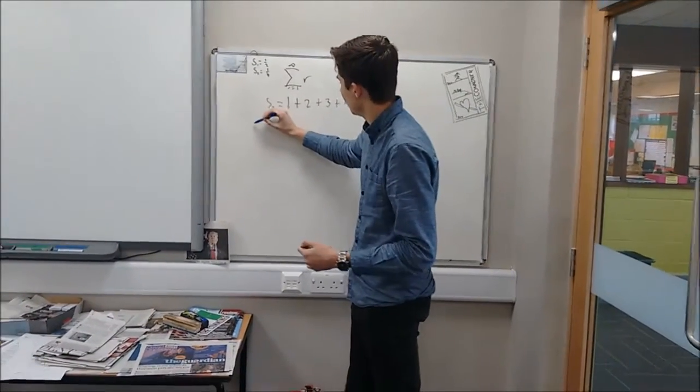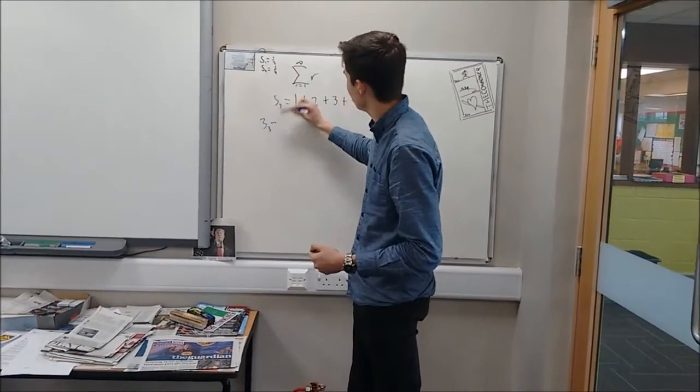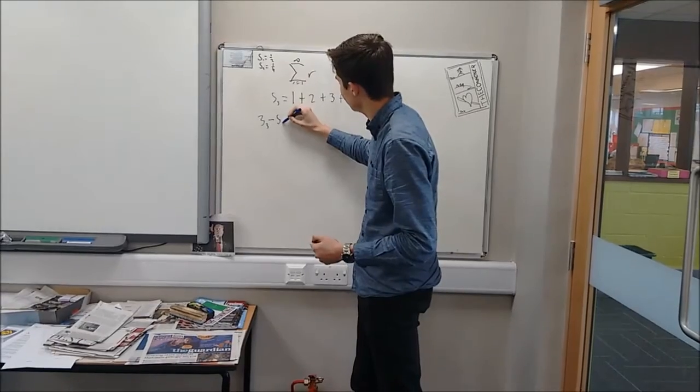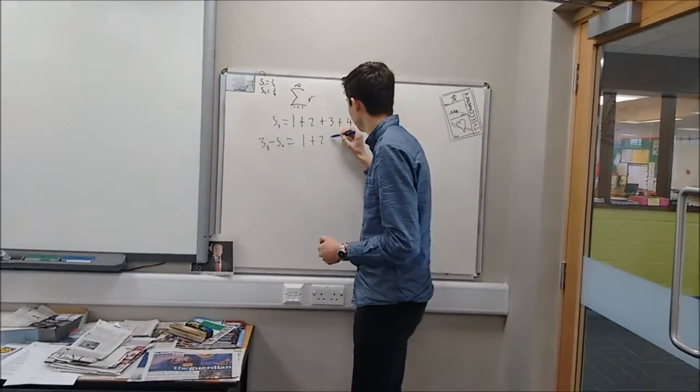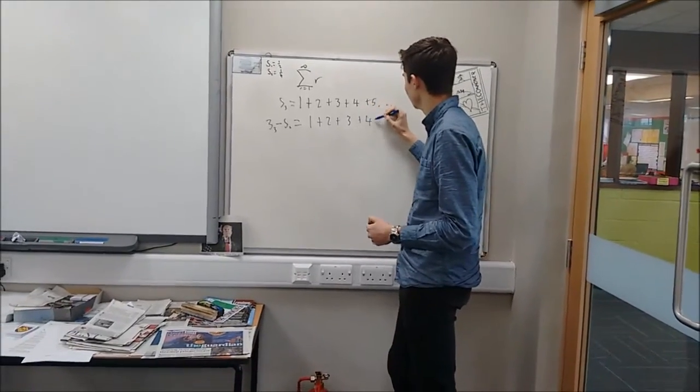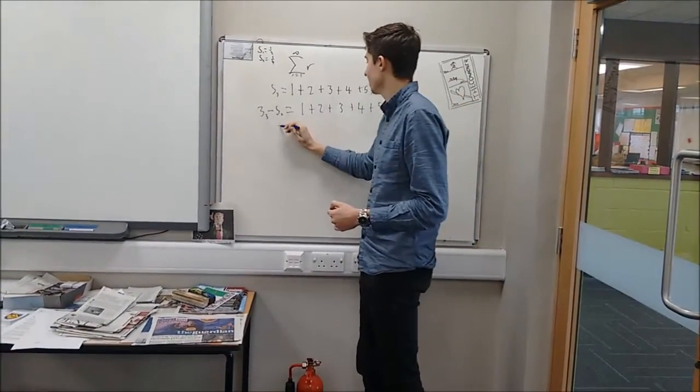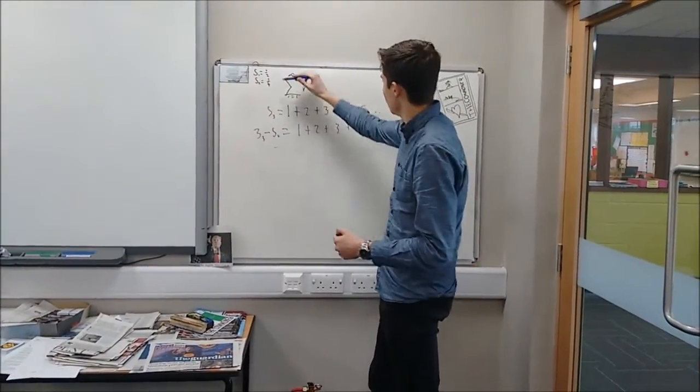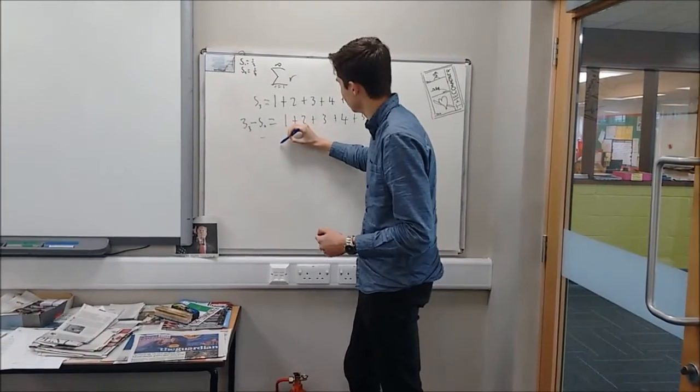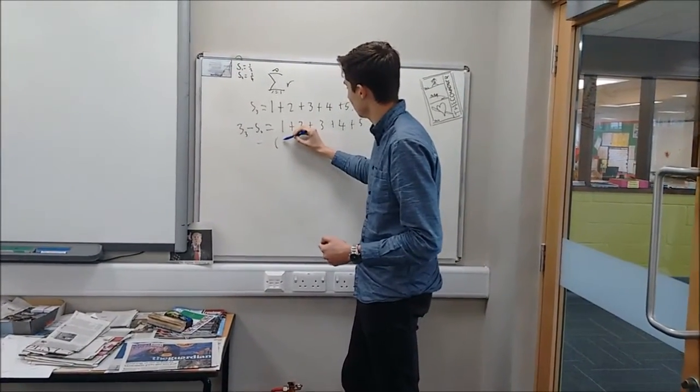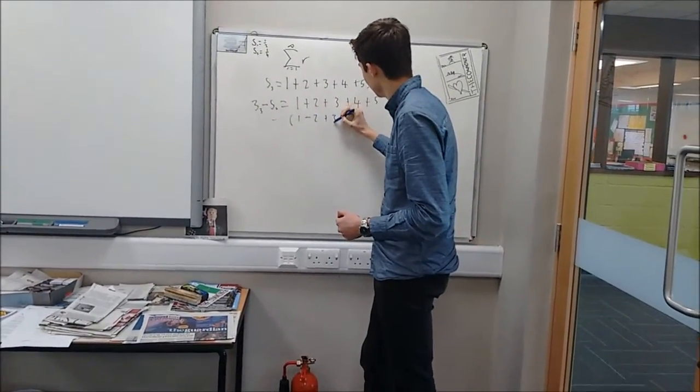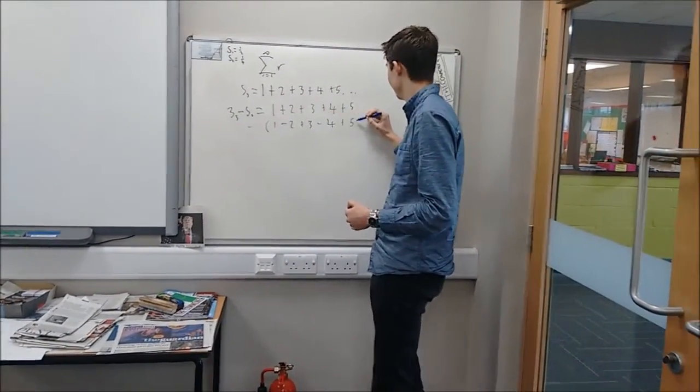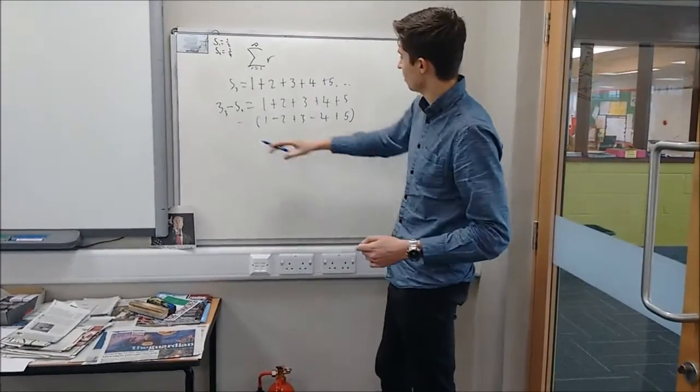So we're going to do S3, and we're going to take away S2 from it, take away a quarter from it. And so we're going to write it out again: 1 plus 2 plus 3 plus 4 plus 5. And this time we're going to be taking away the whole of the quarter equation, if you can remember what that is. That was 1 minus 2 plus 3 minus 4 plus 5.